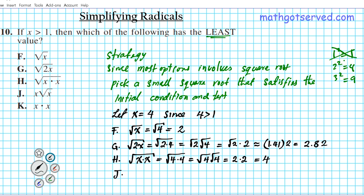Option J, x root x. Let's substitute our test value in there. So 4 root 4. How does it compare with the rest? This is 4 times the square root of 4 is 2. Four times 2 is 8.